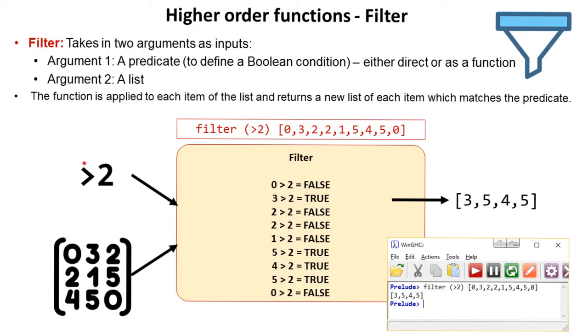So I've supplied the boolean condition directly here. I've said greater than 2 and I've supplied it with a list. So the greater than 2 gets supplied to each item of this list one at a time and only the ones that match where true get chucked out in the resulting list.